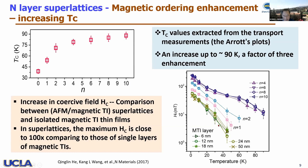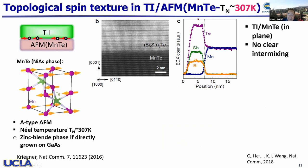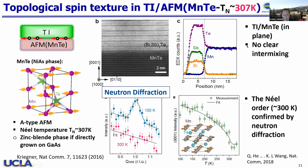So then we looked at a different kind of magnetic order — the in-plane type. Here, the spin texture will be in-plane. Again, we pick the magnetic telluride because we can grow it in-situ with MBE and characterize the interface cleanly, without much intermixing. The Néel temperature is determined by neutron diffraction.